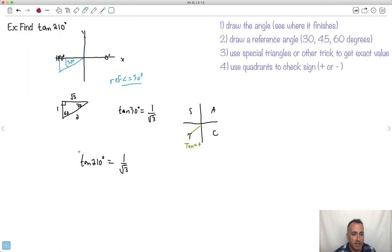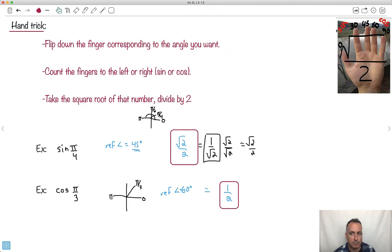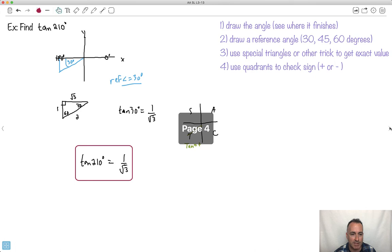Now could you have done this with the hand trick? Yes. The only problem is the hand trick fails you because it only gives you sine and cos. You'd have to be a little bit clever. You would have to say, if you want to use the hand trick, let me just show you how I would have done that.